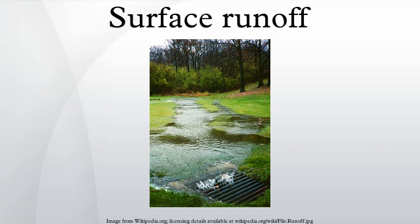Urbanization increases surface runoff by creating more impervious surfaces such as pavement and buildings that do not allow percolation of the water down through the soil to the aquifer. It is instead forced directly into streams or stormwater runoff drains, where erosion and saltation can be major problems even when flooding is not. Increased runoff reduces groundwater recharge, thus lowering the water table and making droughts worse, especially for farmers and others who depend on water wells.